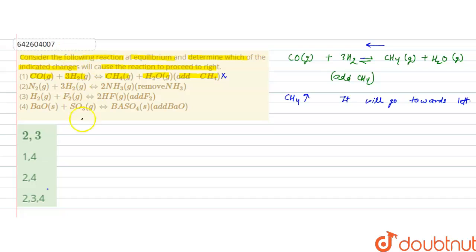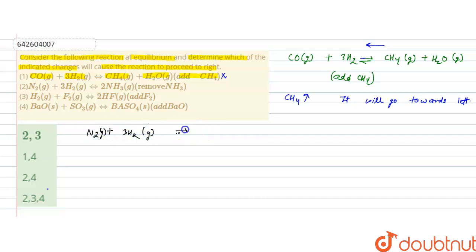The second option is N₂ in gaseous state plus 3H₂ forms two ammonia. The indicated condition is to remove ammonia from the equilibrium.